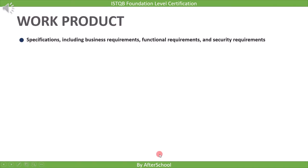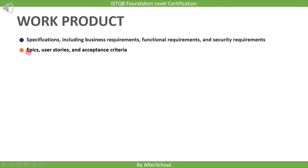This is the first work product — specifications, including business requirements, functional requirements, and security requirements. Now let's move to the second work product, which is EPICs, User Stories, and Acceptance Criteria.